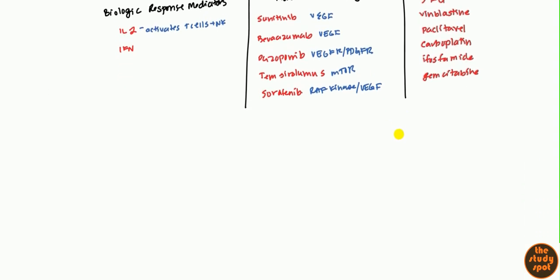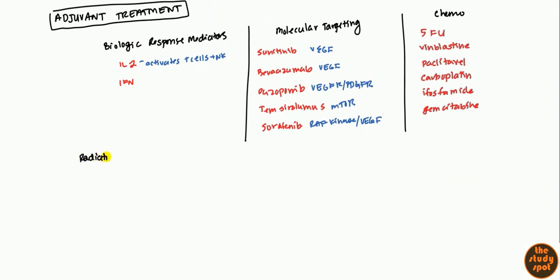Next, radiation. Renal cell carcinoma is not necessarily sensitive to radiation, but the brain metastases are. So we tend to use radiation for that.